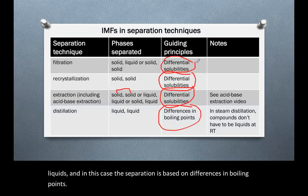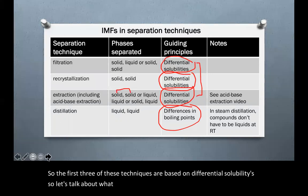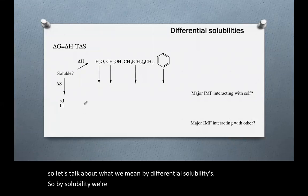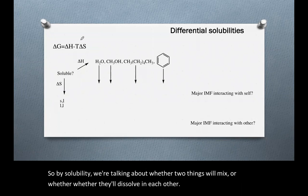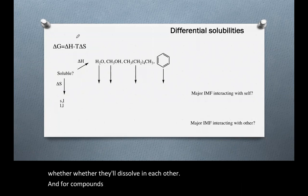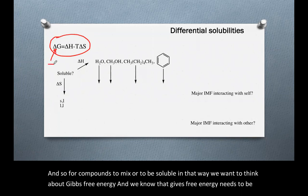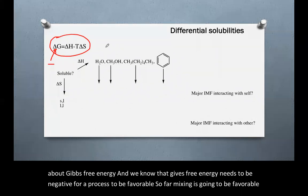The first three techniques are based on differential solubilities, so let's talk about what we mean by that. By solubility we're talking about whether two things will mix or dissolve in each other. For compounds to mix or be soluble, we want to think about Gibbs free energy. We know that Gibbs free energy needs to be negative for a process to be favorable, so if our mixing is going to be favorable, the delta G term needs to be negative.